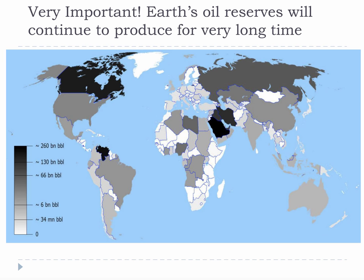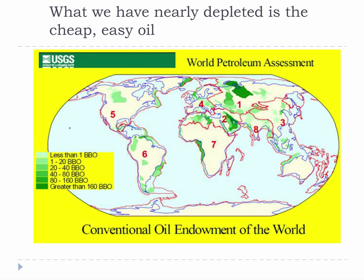Earth's oil reserves will probably continue to produce for a very long time. They are based on something called technically recoverable reserves, and technically recoverable reserves change with technology and economics, so it's almost impossible to say what the total amount of oil available to us is. This is partly why nearly overnight the U.S. became one of the world's largest oil producers again after decades of falling behind. What we have nearly depleted is the cheap, easy oil. The reserves of sweet light crude the world became used to in the 1980s are nearly gone, and what's remaining is still oil, but it's heavy and full of sulfur and not as desirable — however, it is still quite functional.